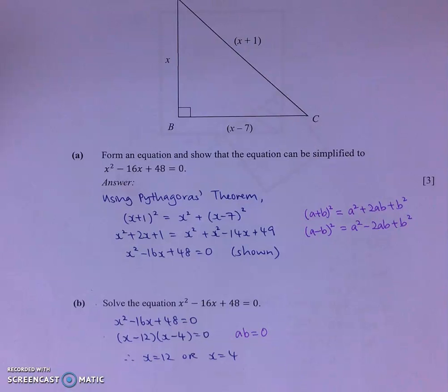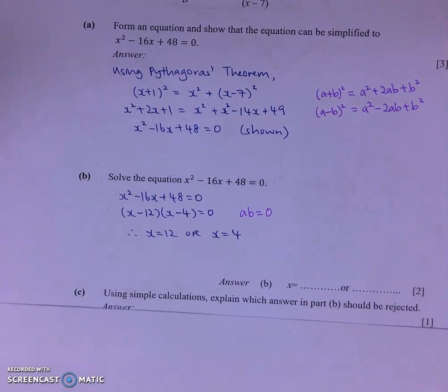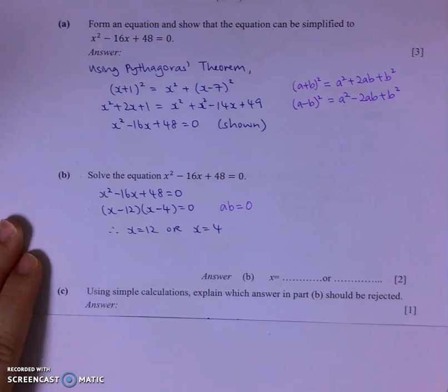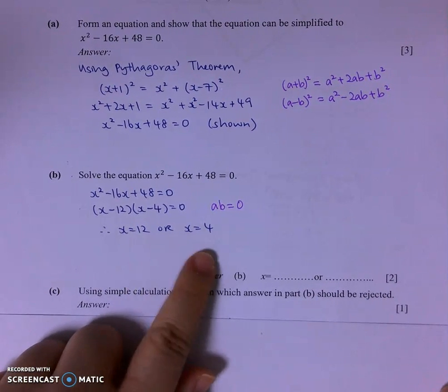Let's go on to part C. For part C, the question wants us to use simple calculations to explain which answer in part B should be rejected. So there are two answers here. Both are positive.